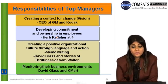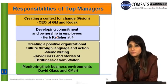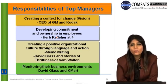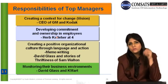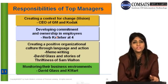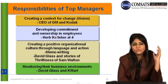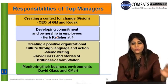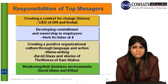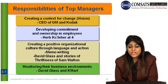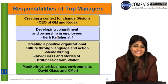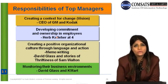The top manager is responsible for making a vision and mission for the company and communicating it to lower-level managers and employees. The CEOs of both General Motors and Kodak were fired because they could not provide this kind of vision and mission. The second responsibility of top managers is developing commitment and ownership in employees. The strongest signals that employees receive come from top managers — if employees perceive that top management is committed to organizational goals, employees will act accordingly.